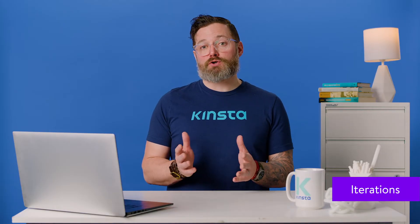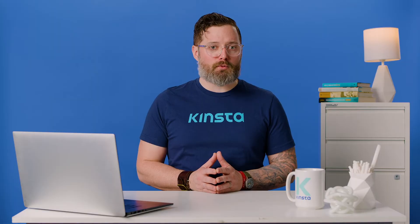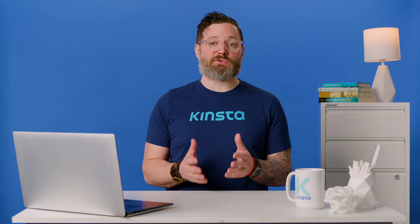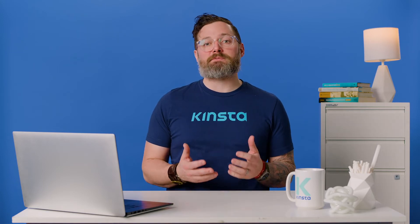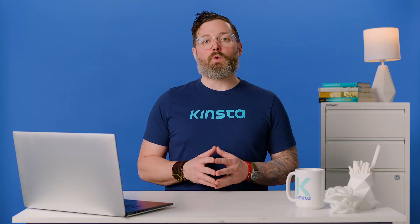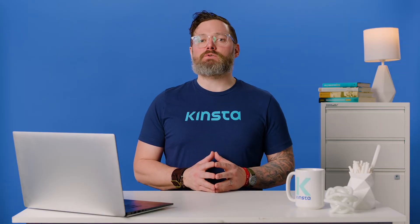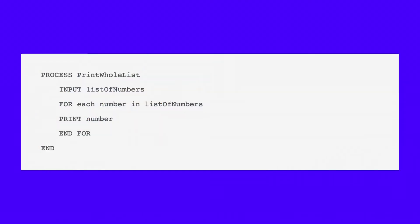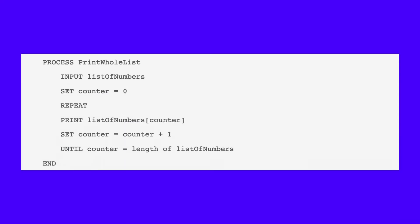Iteration statements repeat a set of steps within a larger function or process. They're often used to perform the same operation on multiple items in a list, or to repeat a process until certain conditions are met. Iterations can be implemented using various types of loops, including for, while, and do-while loops. Let's look at some pseudocode that uses a for loop to iterate through a list of numbers. This print whole list process takes in a list of numbers and iterates through the list, displaying each number on the screen. Alternatively, it's more common in pseudocode to use the keywords repeat and until in place of do-while. We can switch out names, keywords, and syntax pieces as needed — this is just one demonstration of pseudocode's flexibility.